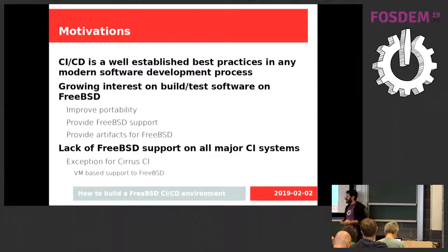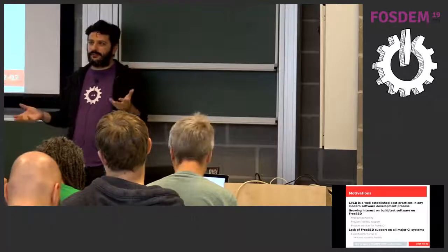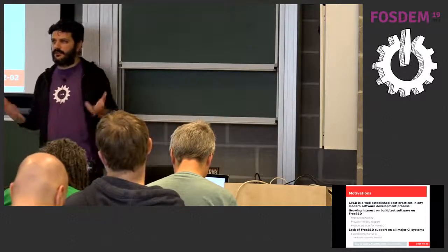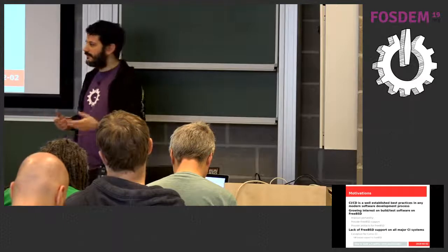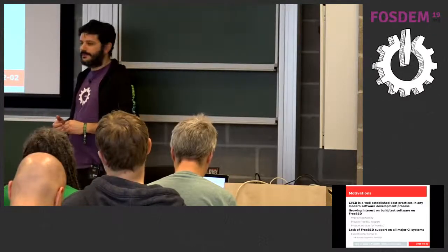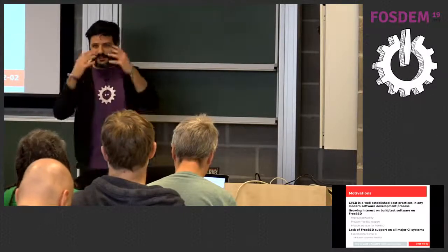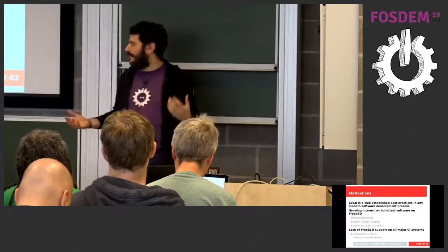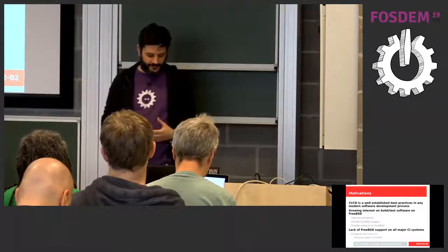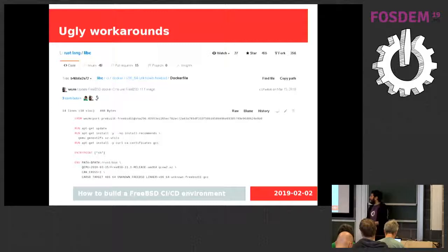So CirrusCI is a Google Cloud-based company. They provide FreeBSD support using Google Cloud Engine VMs basically. But I don't want to use VMs — I want something smarter. I want to control the setup and the teardown. I can use jails or things like that. So I can do it. How hard can that be? It should be easy.